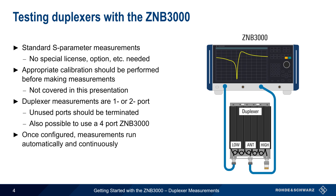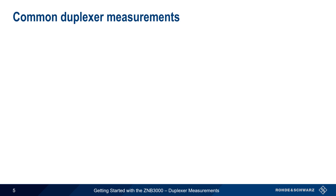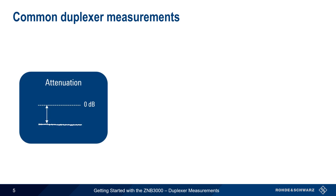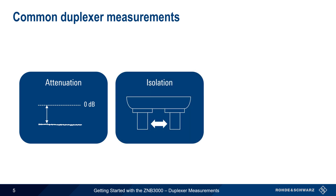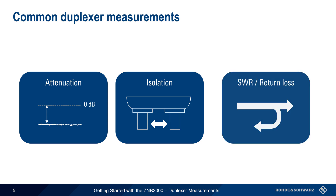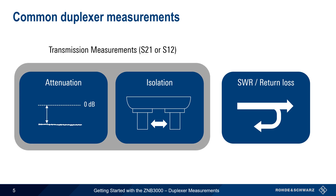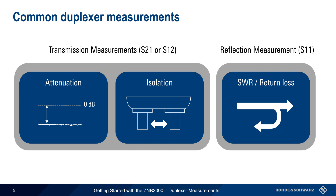Once the measurement is configured, it will run automatically and continuously, with results updated on screen after every sweep. There are three basic duplexer measurements. The first is the attenuation between each port and the antenna port, which provides information on the notch depth, bandpass characteristics, and insertion loss. The second is the isolation between the high and low ports. The third is the amount of reflected power at each port, quantified as standing wave ratio or return loss. The first two are transmission measurements — S21 or S12 — and the third is a reflection or S11 measurement.